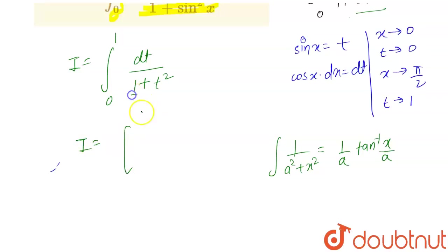I can write our integral as equal to, the value for a is 1. So we can say that 1 by 1 tan inverse t, because here in place of x our variable is t, so tan inverse t. Now here the limit is 0 to 1.